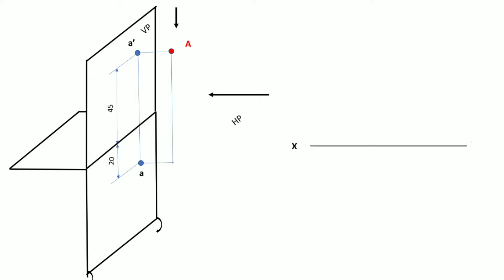We draw the XY line joining the vertical plane and horizontal plane. Whatever we get on the left-hand side is the actual projection of point A that we are supposed to draw with respect to the XY line on the right-hand side. At a distance of 45 mm above XY, we get point a-dash. We then draw a projector line from point a-dash, and on this projector line we mark point a at a distance of 20 mm below the XY line.